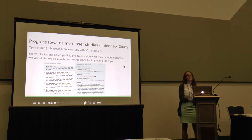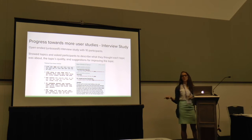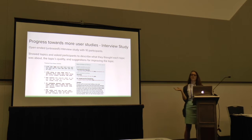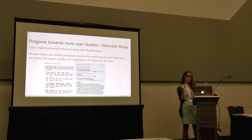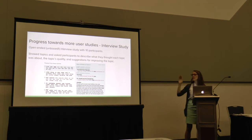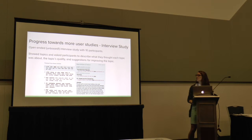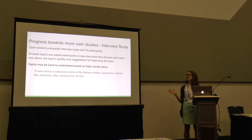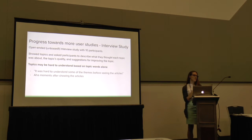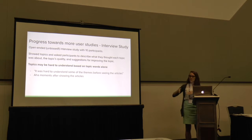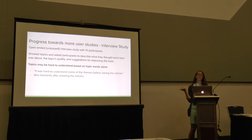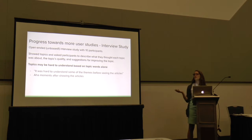We did an open-ended interview study. We didn't want to bias our users by what the algorithm could already do. So we sat down with 20 topics generated from news articles, showed them each topic one by one — just the topic words — asked what they thought the topic meant and the quality, then showed them the documents and asked for refinement suggestions. We found big problems with topic understanding: topics were hard to understand just based on words alone. We noted a lot of 'aha moments' where after seeing the articles, users would say, 'Now I see what it was about.' This is important because many topic visualizations only show words, and we found it's important to let users see both.